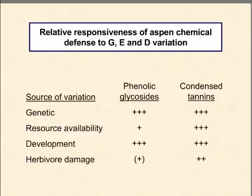To summarize the effects of environmental and genetic factors on defense compounds: both phenolic glycosides and tannins are strongly determined by genetic composition. Phenolic glycosides are only marginally affected by resource availability, whereas condensed tannins are strongly affected. Both condensed tannins and phenolic glycosides are strongly affected by developmental stage. Phenolic glycosides are only marginally affected by prior herbivore damage, whereas condensed tannins are more significantly affected by prior damage.